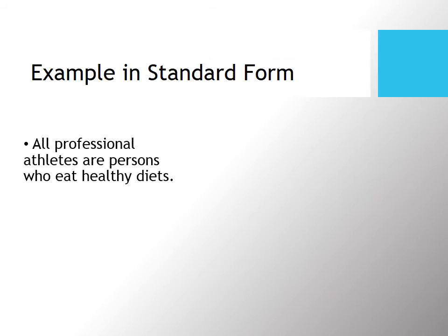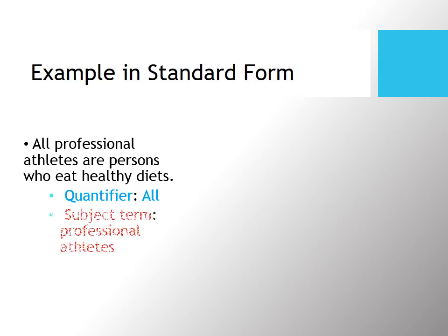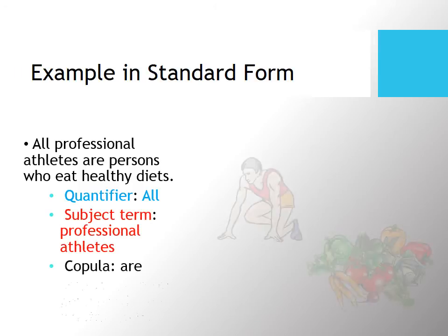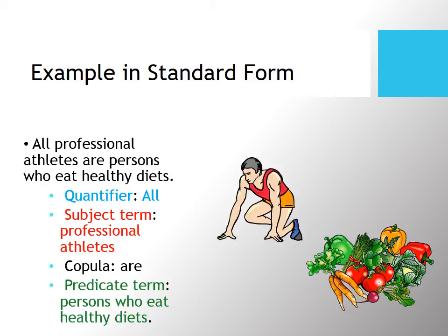Going back to our earlier examples: if somebody says 'professional athletes eat healthy diets,' what they probably intend is 'all professional athletes are persons who eat healthy diets.' The quantifier is 'all,' the subject term is 'professional athletes,' the copula is 'are,' and the predicate term is 'persons who eat healthy diets.' You have to do a little translating to reach this point, but it's a talent that develops with time.